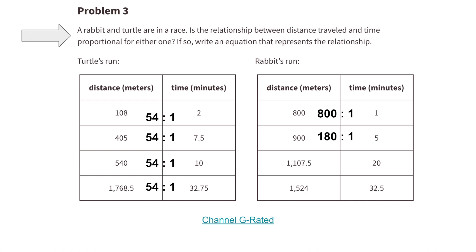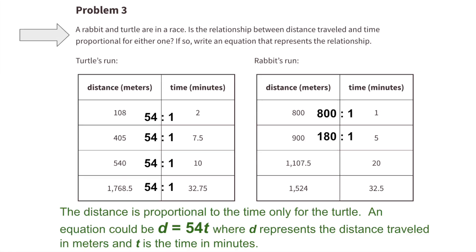Now we need to write an equation that represents the relationship of distance and time for the turtle's run. The distance is proportional to the time only for the turtle. An equation could be d = 54t, where d represents the distance traveled in meters and t is the time in minutes.